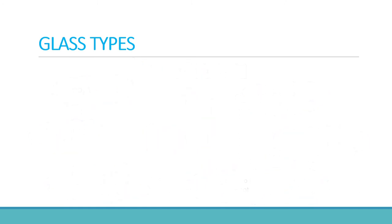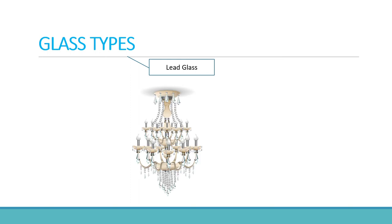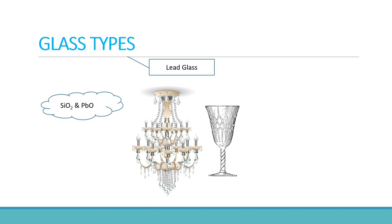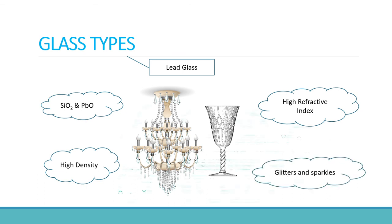Finally, let's have a look at lead glass, which is mainly used in decorative items such as chandelier lights, crystals, prisms, and beautiful drinking glasses. The main composition of lead glass are silicon dioxide and lead oxide. These glasses have high density. In addition, they have high refractive index which gives it a glittering and sparkling effect.